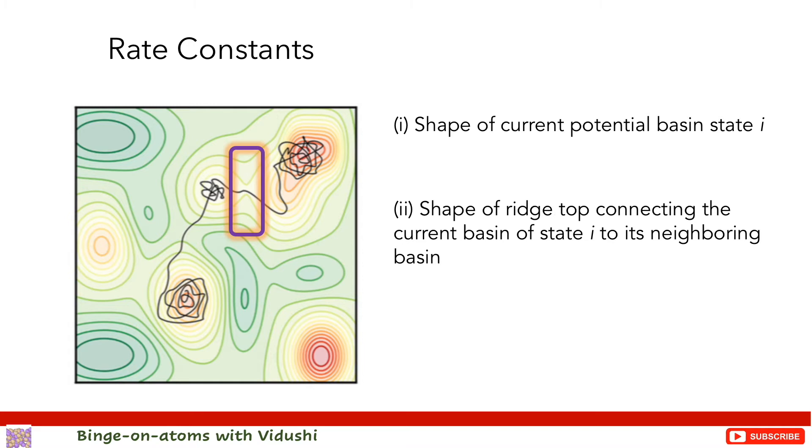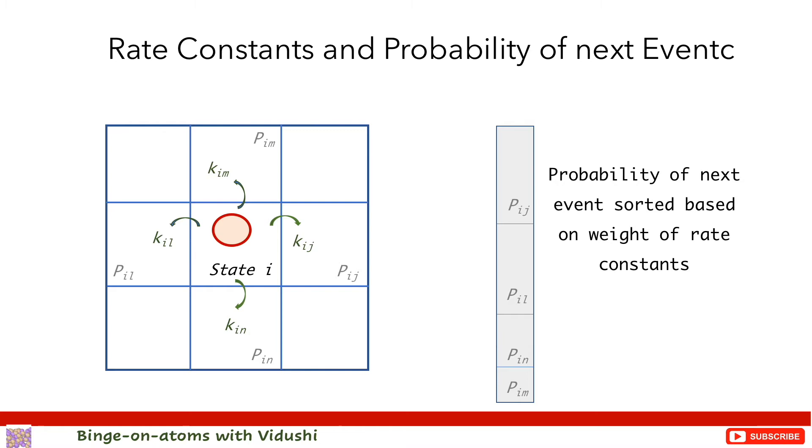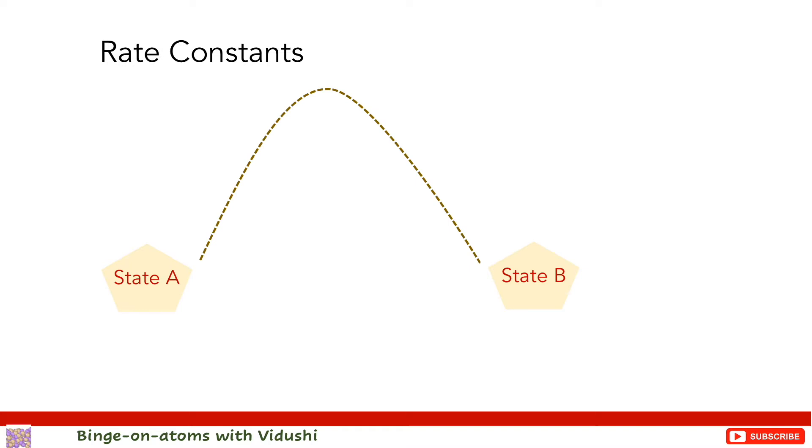As the transition from state i to the next depends only on rate constants, we can design a simple procedure to propagate the system correctly from state i to j if we know the rate constants correctly for every event. Let us consider there are only two states A and B which are connected by a barrier associated with the rate constants KAB and KBA, the rate constants for forward and backward transition of the system.